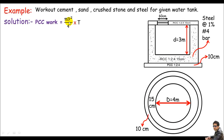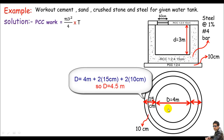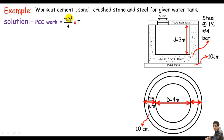Which diameter should I plug into the equation? I should use the diameter of the external circle. Adding 15 cm to each side for the wall and 10 cm to each side for the PCC gives: 4 m + 0.30 m + 0.20 m = 4.5 m. So the external diameter is 4.5 m. Plugging in: π × 4.5² / 4 × 0.1 = 1.59 cubic meters — this is the PCC work at the base.